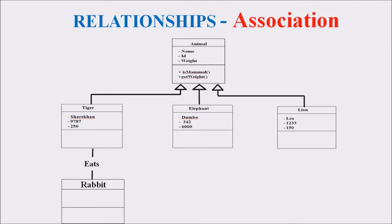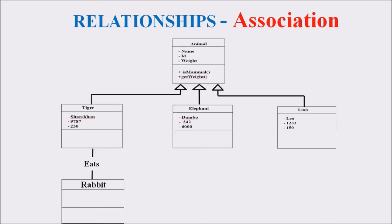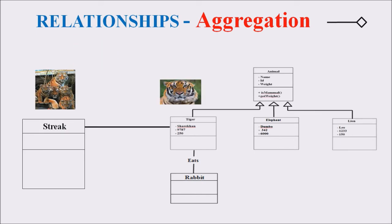The next relationship is aggregation, which is represented by an open or unshaded diamond. The Animal class is inherited by Tiger, Elephant, and Lion, and there is an association between Tiger and Rabbit. For aggregation, we represent a class called Streak. A streak means a group of tigers — a streak is an aggregation of the Tiger class. All the properties of Tiger can be grouped into the Streak class, and the Streak class has more than one type of object.